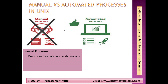In manual processes, you might need to execute various Unix commands manually — like changing directory, going to a particular directory, then loading a file into that directory or downloading from it, or executing shell scripts manually. To do all these operations, we basically use SSH clients like PuTTY or any other SSH client, and for FTP file transfer operations we use WinSCP.